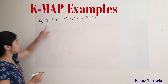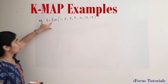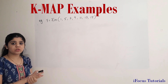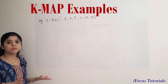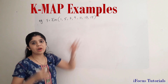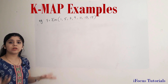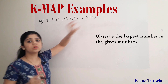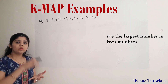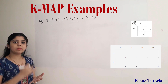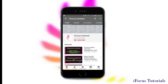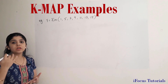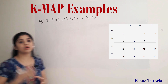The next example is given using the sigma symbol, which indicates the expression is in SOP form. But how many variable K map do we use? Here we don't have alphabets directly, so we observe the highest number given, which is 15. Since 15 is not present in a 2-variable or 3-variable K map, but is present in a 4-variable K map, we require a 4-variable K map for this expression.